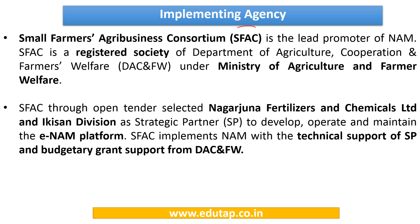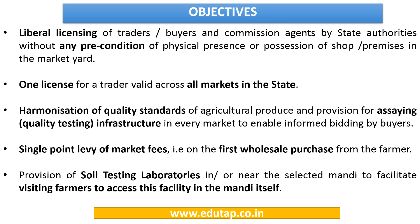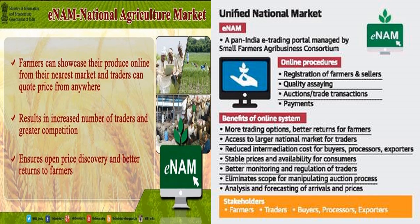SFAC, i.e., Small Farmers Agri-Business Consortium, is the implementing agency of NAM. It is a registered society under the Ministry of Agriculture and Farmers Welfare. SFAC selected Nagarjuna Fertilizers and Chemicals Limited and Ipsen Division as strategic partners to develop, operate, and maintain the E-NAM platform. The objectives of the E-NAM platform include liberal licensing without preconditions, one license valid across all markets in the state, single point levy of market fees, and provision of soil testing laboratories in or near selected Mandis.